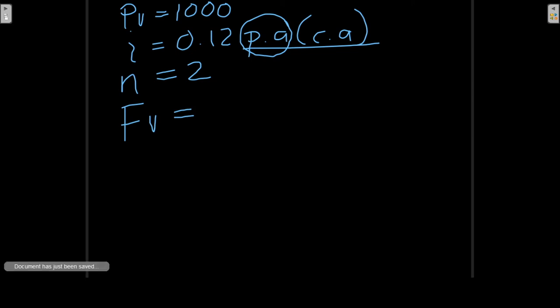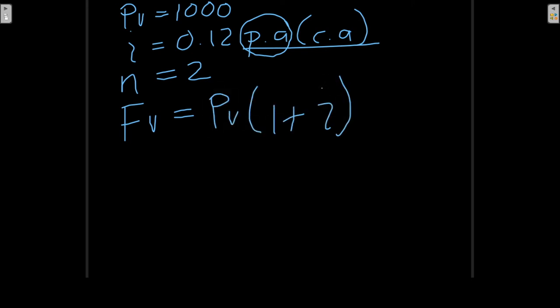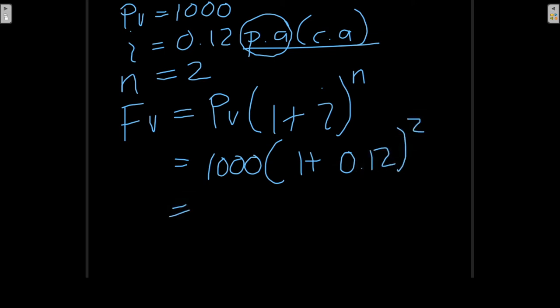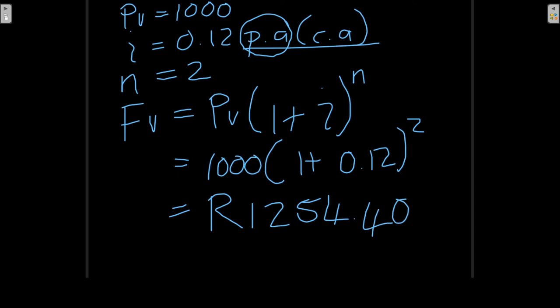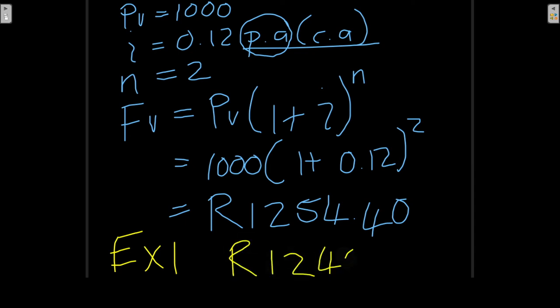Because we are working with compound interest, the formula is: future value = present value × (1 + interest rate)^N. So future value = 1,000 × (1 + 0.12)^2, giving a future value of 1,254 rands and 40 cents. Comparing to example 1 for simple interest, the answer was 1,240 rands — as expected, compound interest gives a higher future value.